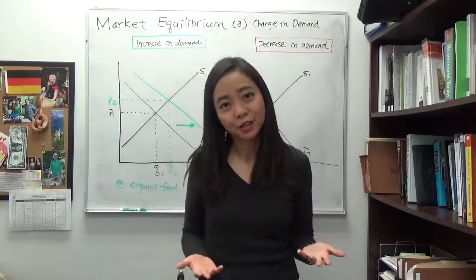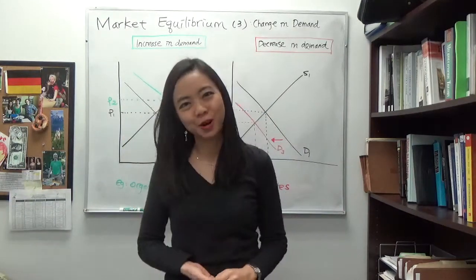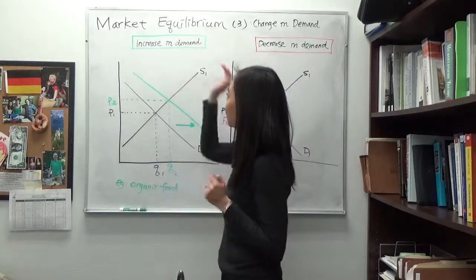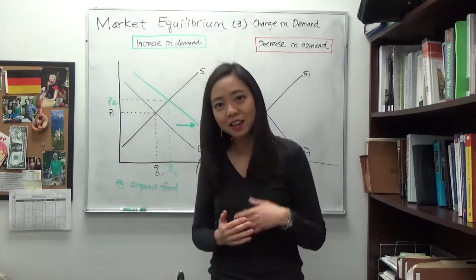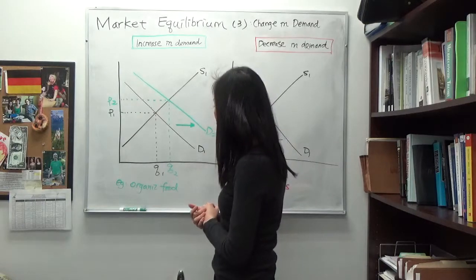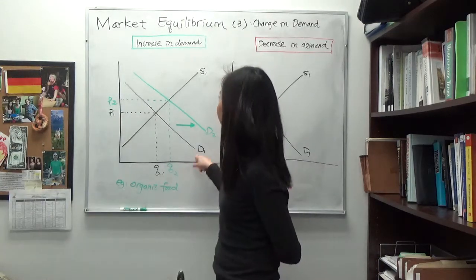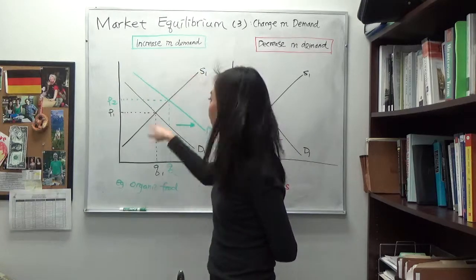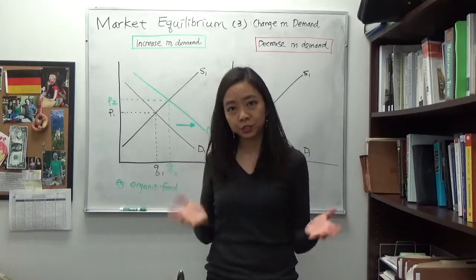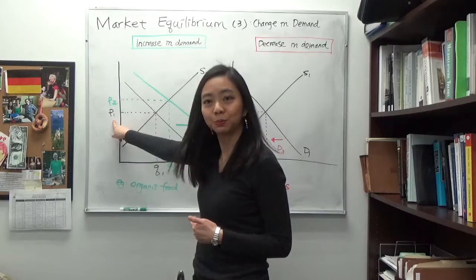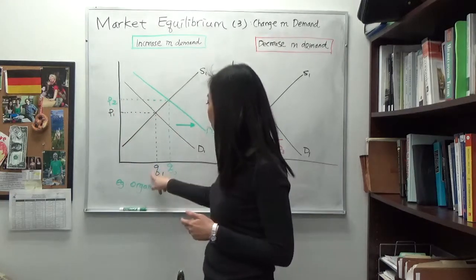So when there is a change in demand, what will happen to our market equilibrium? We're going to start with our first case, increase in demand. Suppose we start our initial equilibrium with demand curve D1 and supply curve S1. In their intersection, we see the original equilibrium price P1 and equilibrium quantity Q1.